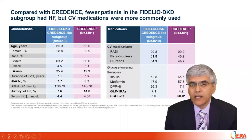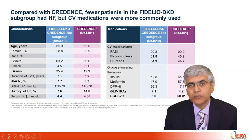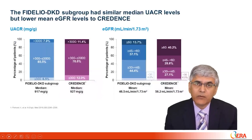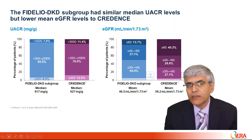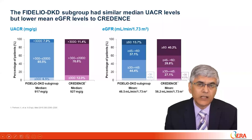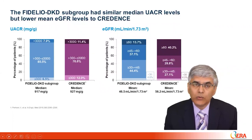Of the 4,608 patients assessed, mean treatment adherence was high at 92%. Median UACR was similar between groups. However, eGFR was much lower in Fidelio-DKD at a mean of 46.5 compared to 56.2 in CREDENCE, because there were fewer patients with GFR greater than 60 in Fidelio-DKD. This is important because earlier SGLT2 inhibitor trials have demonstrated a diminishing effect on kidney protection with lower eGFR.